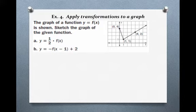We're going to apply transformations to a generic graph. The graph of Y equals F of X is shown, and we're going to sketch the graph of the given function using the labeled points (0, 4), (1, 1), and (4, 3). The first function we look at is Y equals one-half times F of X. The only transformation here is a vertical shrink by a factor of one-half.